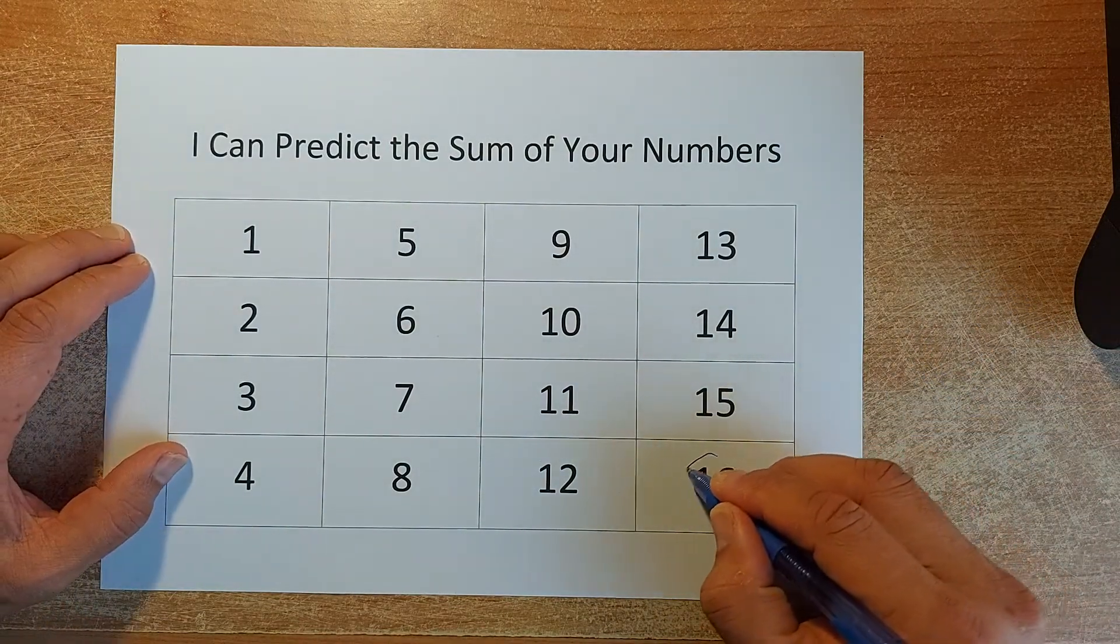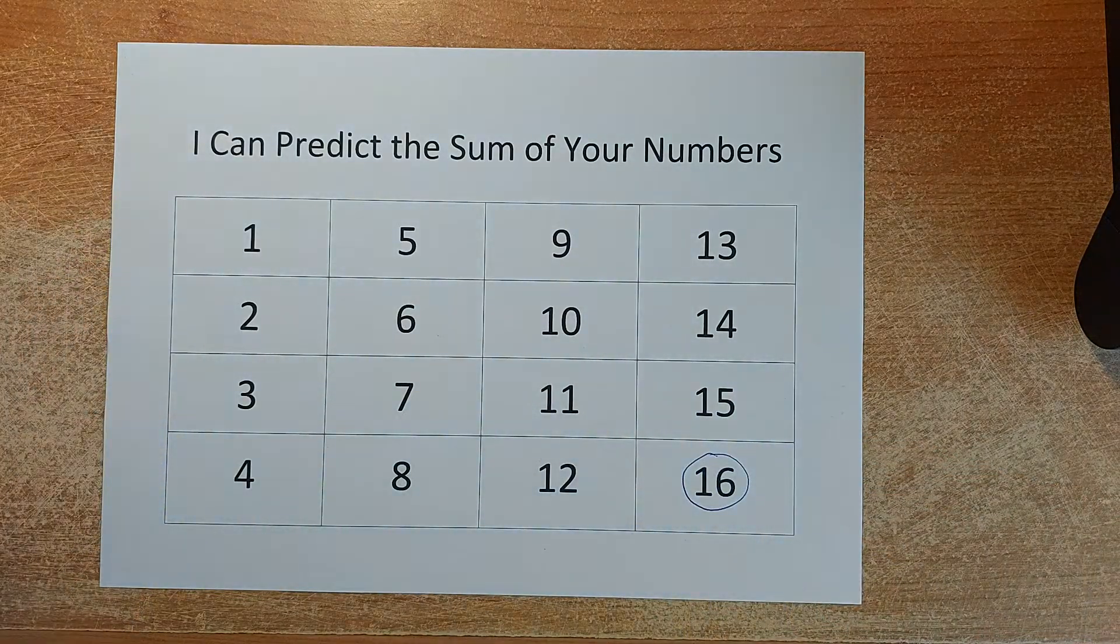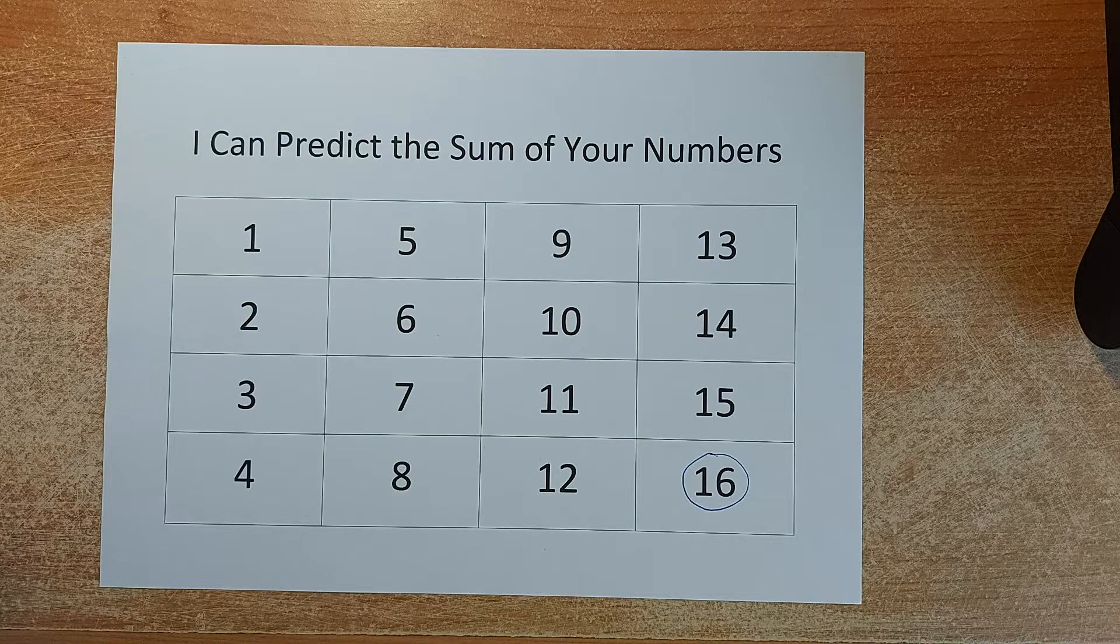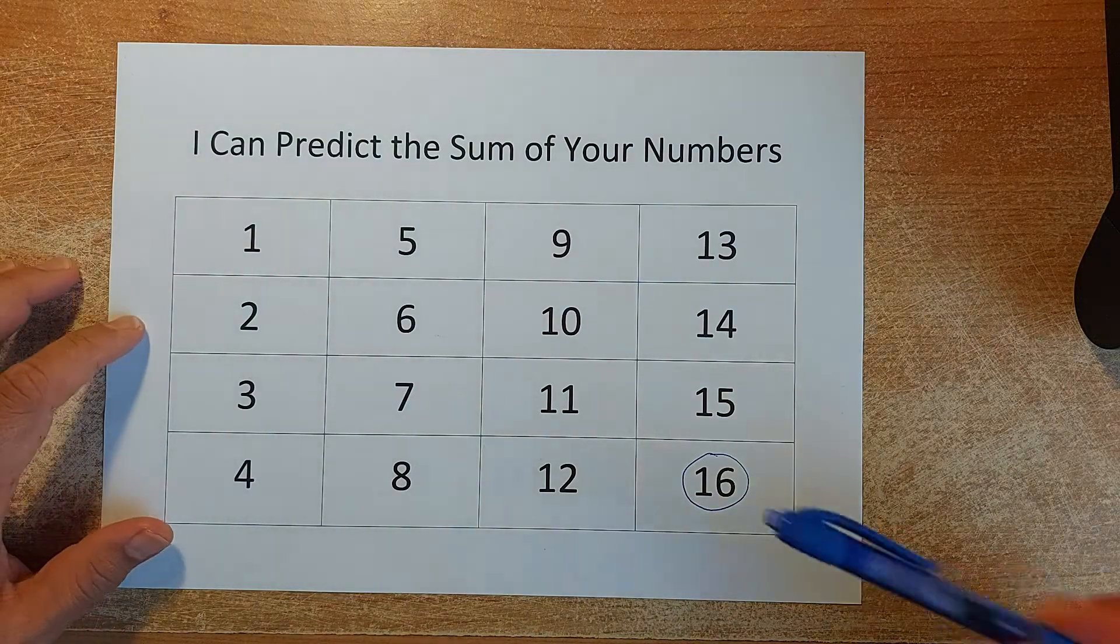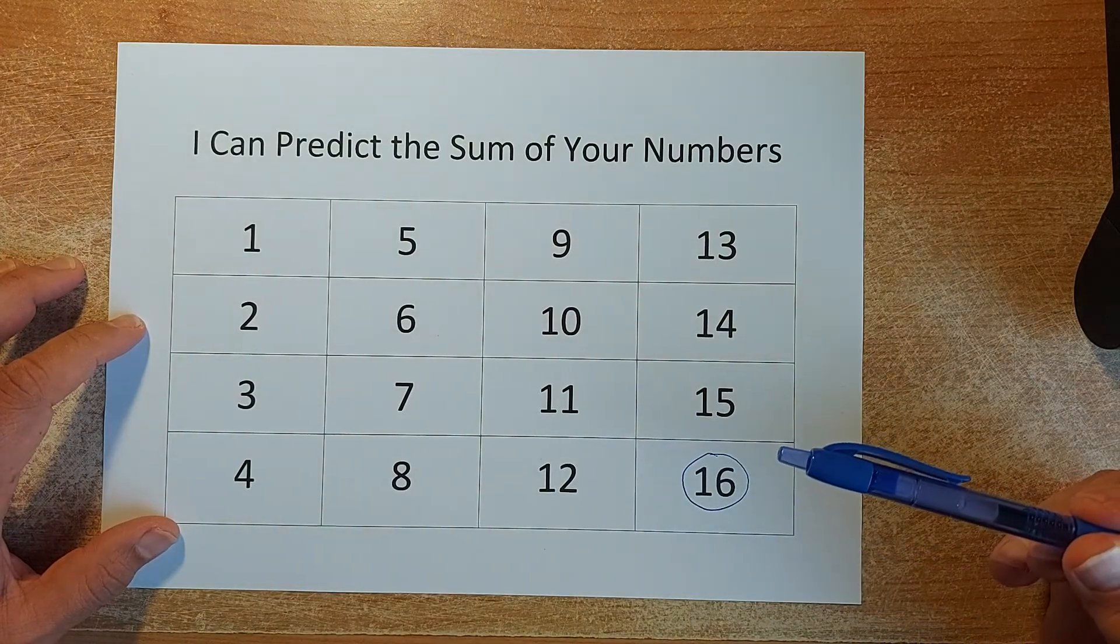So for example, if I choose 16, I am going to put 16 on my piece of paper. Just remember your number so that you're going to add them up later on. So I'm going to choose 16. So the first number is going to be 16. So far so good?